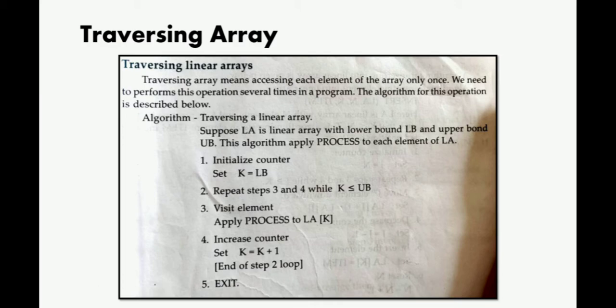The first one is traversing linear array. Traversing array means nothing but accessing each element of the array only once. Suppose you have a sequence of array elements and you want to access all of them once. We need to perform this operation several times in the program because you have lots of array elements and each time you have to access one element, so you have to use a loop.